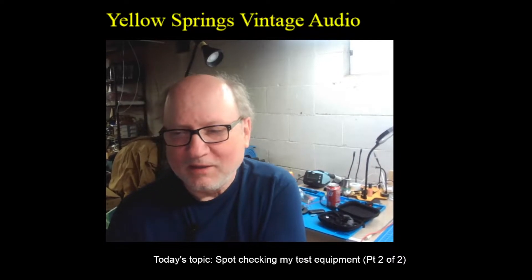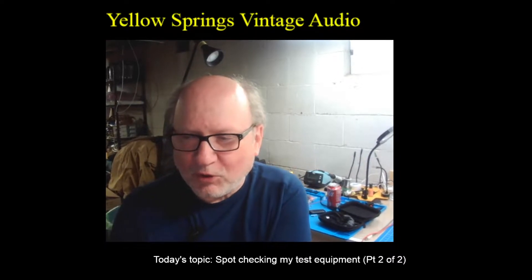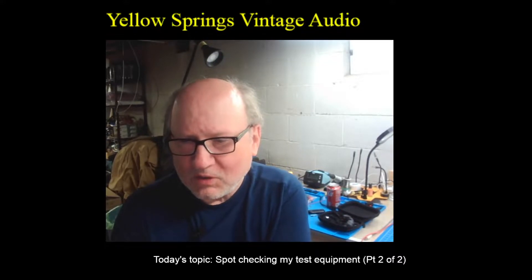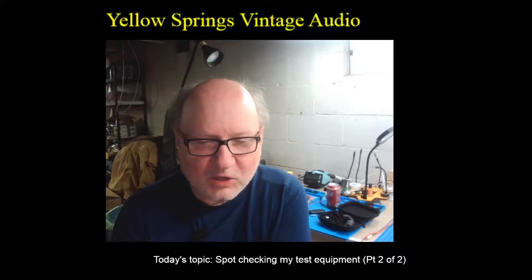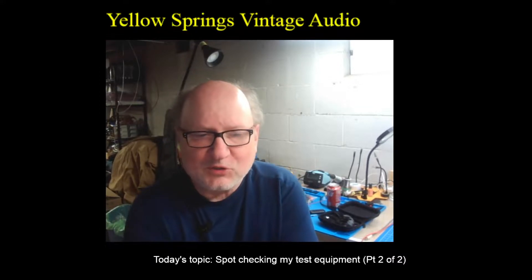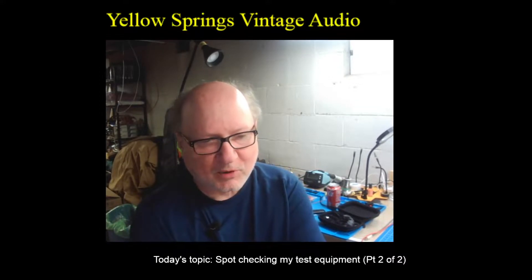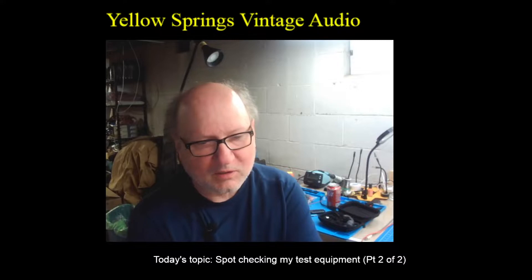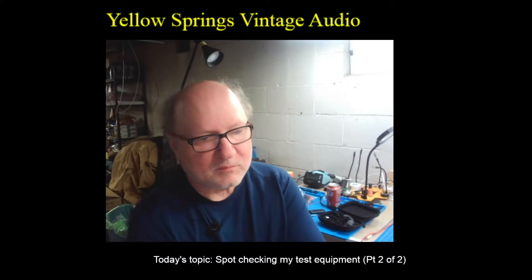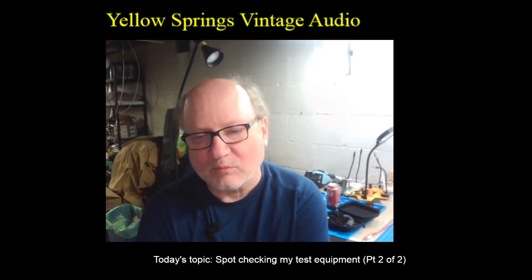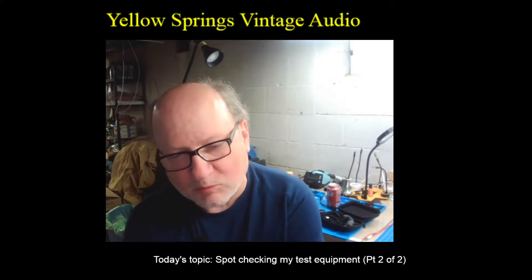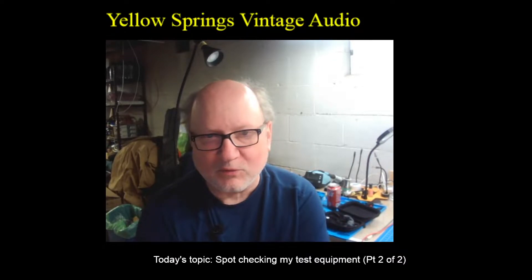Hi, welcome back. This is Keith, and this is part two of two of spot checking my test equipment. In part one, we talked about how to calculate the tolerance of the equipment, compare that to the tolerance of the calibration source, in this case the DMM check plus, and then figure out if the DMM check plus was accurate enough to actually use to calibrate or spot check the equipment.